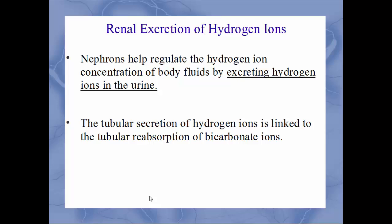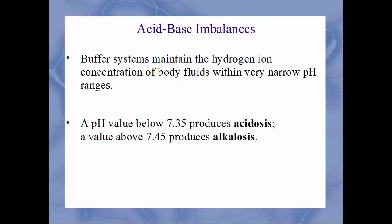The nephrons — discussed in the previous chapter — help regulate hydrogen ion concentration by excreting those ions into urine so they can be eliminated. The tubular secretion of hydrogen ions is also linked to the tubular reabsorption of bicarbonate ions; one impacts the other.